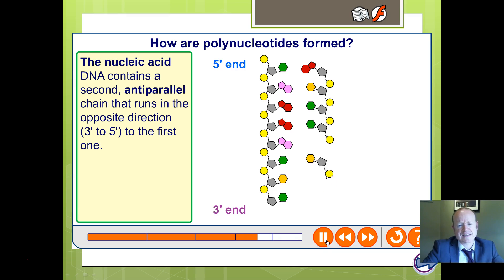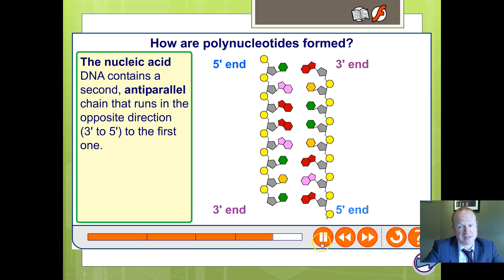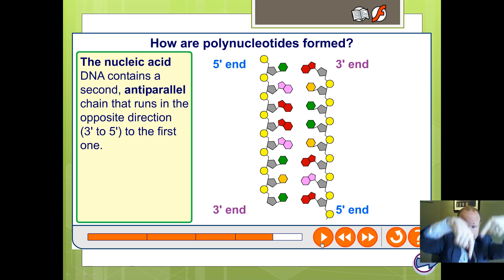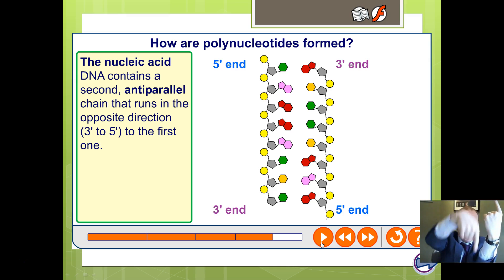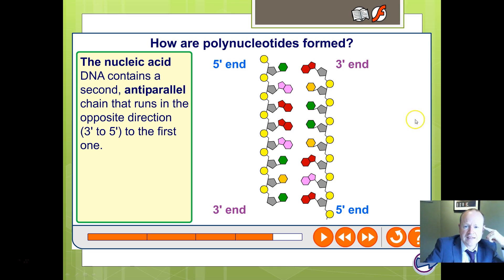The chain has two ends: we use 5 prime and 3 prime to describe them. On the 5 prime end, carbon 5 is at the tip; at the 3 prime end, carbon 3 is at the bottom. DNA will continue to add on more and more nucleotides. You can see different bases, but principally the phosphate and sugar arrangement forms the backbone. DNA has a second chain which runs in the opposite direction — hence the name anti-parallel — running in two different directions, so 3 prime is at the top and 5 prime at the bottom.